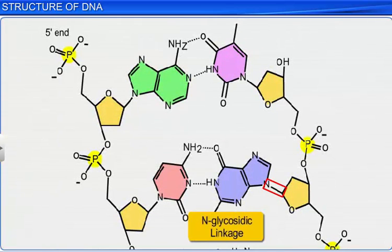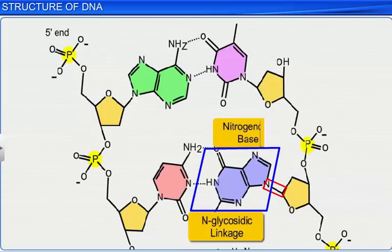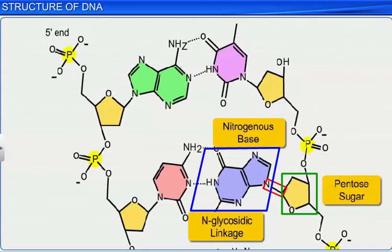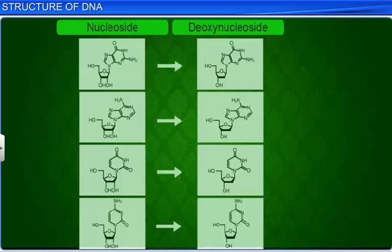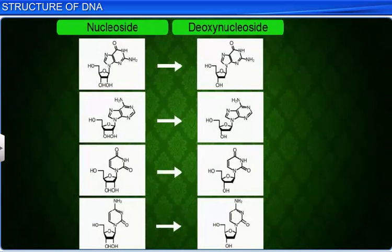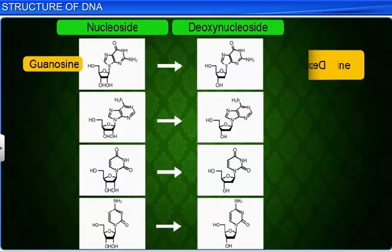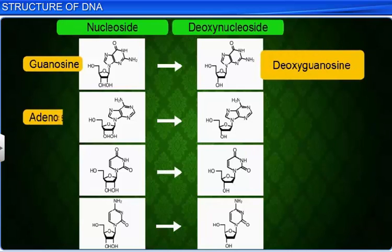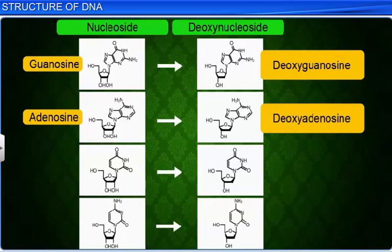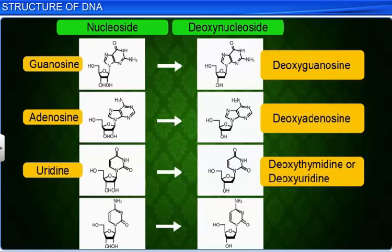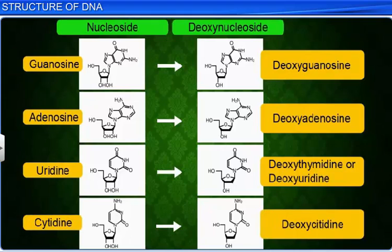Now, through an N-glycosidic linkage, a nitrogenous base is linked to the pentose sugar, forming a nucleoside, which can be guanosine or deoxyguanosine, adenosine or deoxyadenosine, uridine or deoxythymidine, and cytidine or deoxycytidine.